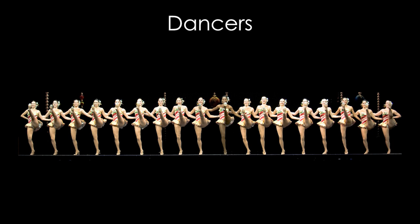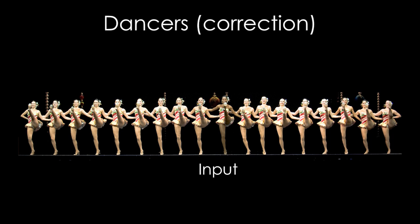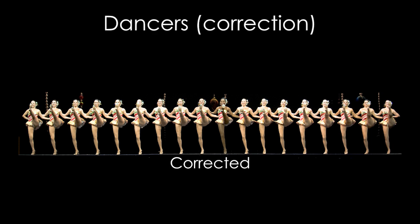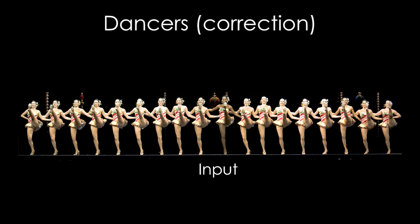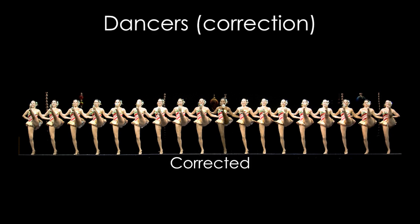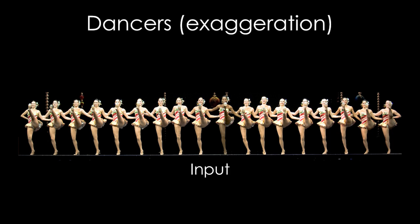The dancers in this example all seem very similar at first glance, but in fact there are a number of variations between them, such as change in pose, irregular spacing, and differences in height. Our method automatically corrects for all these differences while keeping the dancers' individual identities. Here we show the exaggeration of these differences.